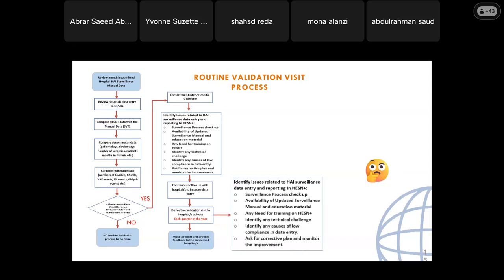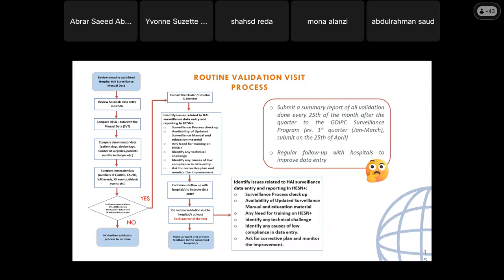To identify issues, conduct a surveillance process checkup: check the availability of updated surveillance manuals and educational materials, any need for training on HESNPLUS, identify technical challenges, and identify causes of low compliance in data entry. Ask for a corrective action plan and monitor improvement. There must be continuous follow-up with hospitals to improve data entry. Routine validation visits to hospitals must be done at least each quarter of the year, and a summary report must be submitted on or before the 25th of the month after each quarter — for example, first quarter January to March must be submitted by April 25th.